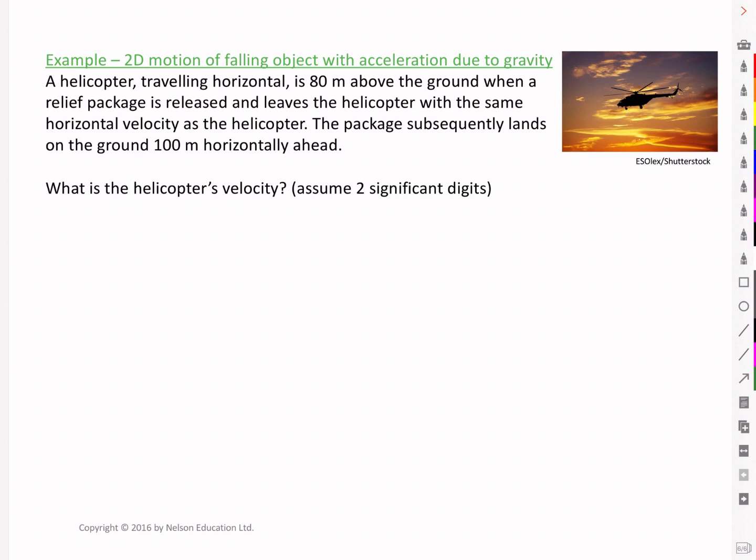Hello class, here we have another example where we are going to look at 2D motion of a falling object, again with acceleration due to gravity. It reads: a helicopter travelling horizontal is 80 meters above the ground when a relief package is released and leaves the helicopter with the same horizontal velocity as the helicopter. The package subsequently lands on the ground 100 meters horizontally ahead. What is the helicopter's velocity?